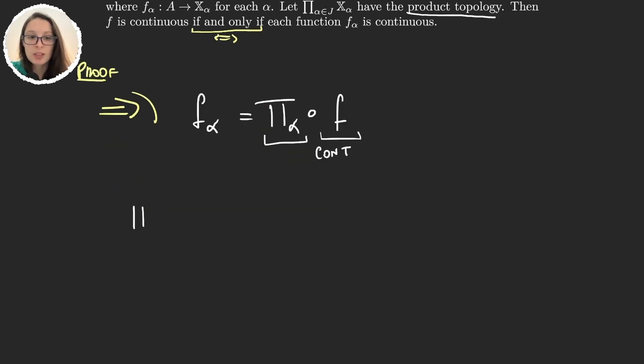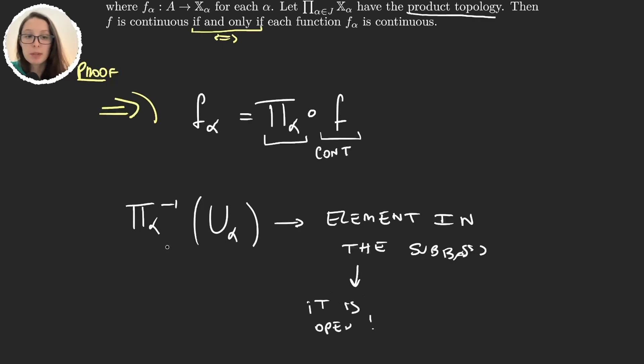And let's see why the projection is always continuous. Well, for this we should take π_α the preimage of some open set U_α. But this is an element in the subbasis. Remember that the product topology was defined via a subbasis of elements of this type. So, trivially, it's open. And so, π_α is continuous, and the composition, because of what we know about composition of functions, is also continuous.